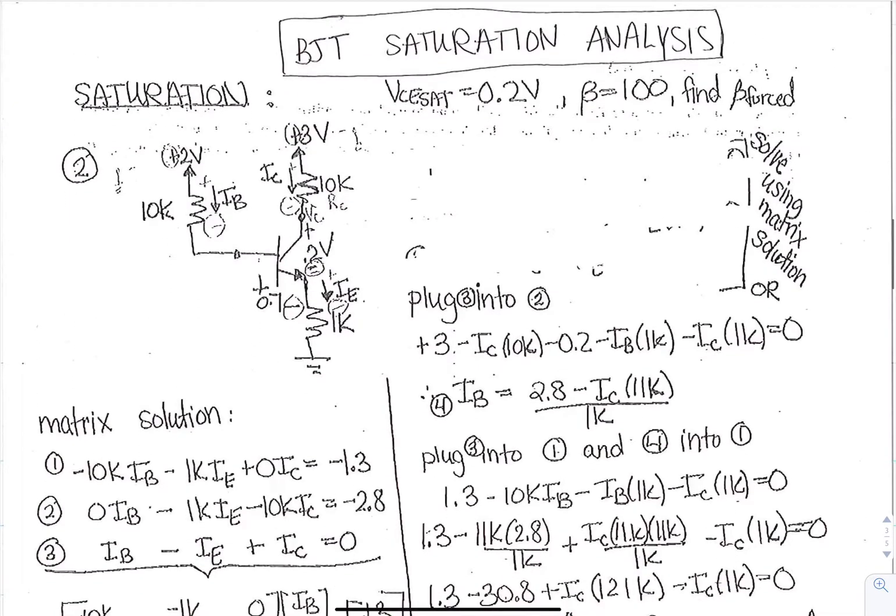So here's an example of a BJT that is in saturation. We're given this VCE sat of 0.2. So we're going to use that value. Beta is given as 100. And we want to find beta forced here. So the first step is to set the values between VCE, which is going to be here at 0.2. And then we also want to set that VBE at 0.7. So these two values you set, and then you're going to take the loops from the base through the emitter, and also from the collector to the emitter. So we'll first start and do this loop here.